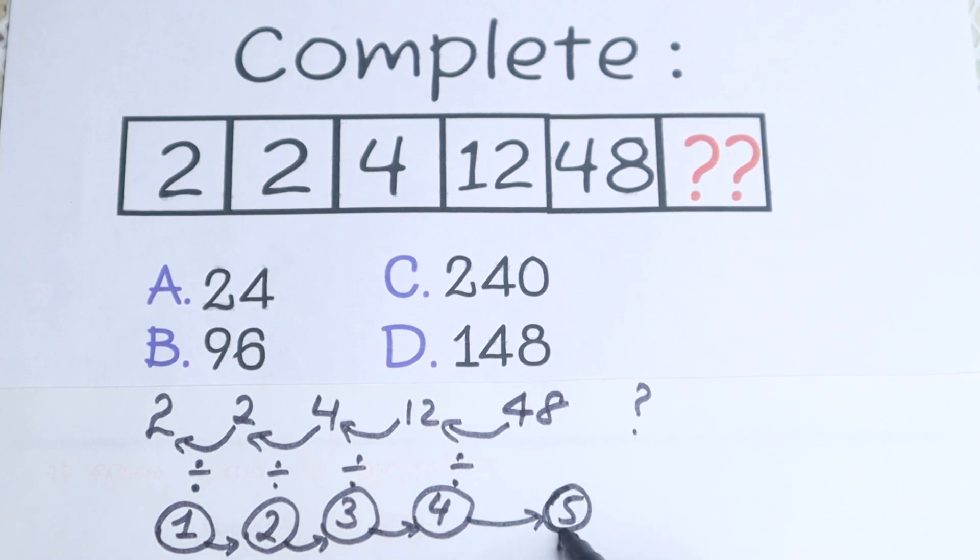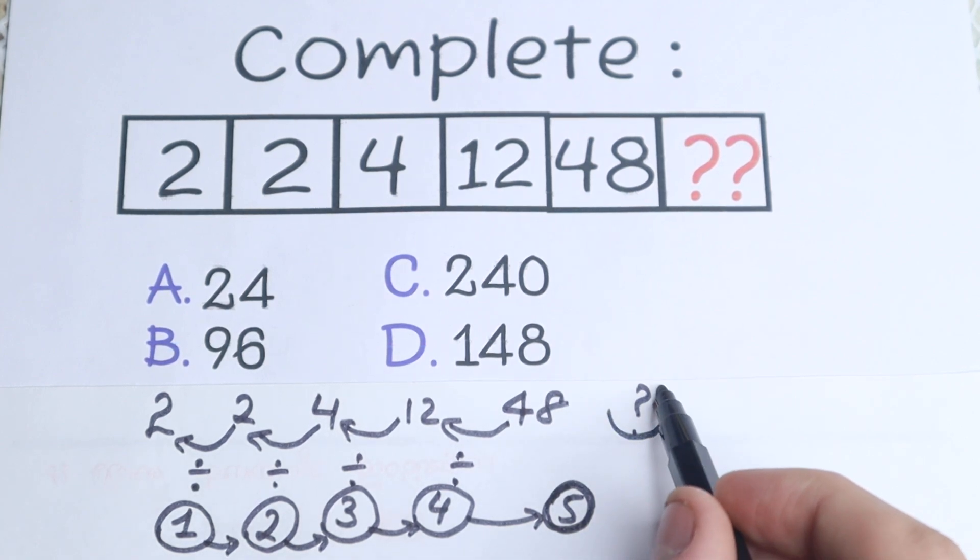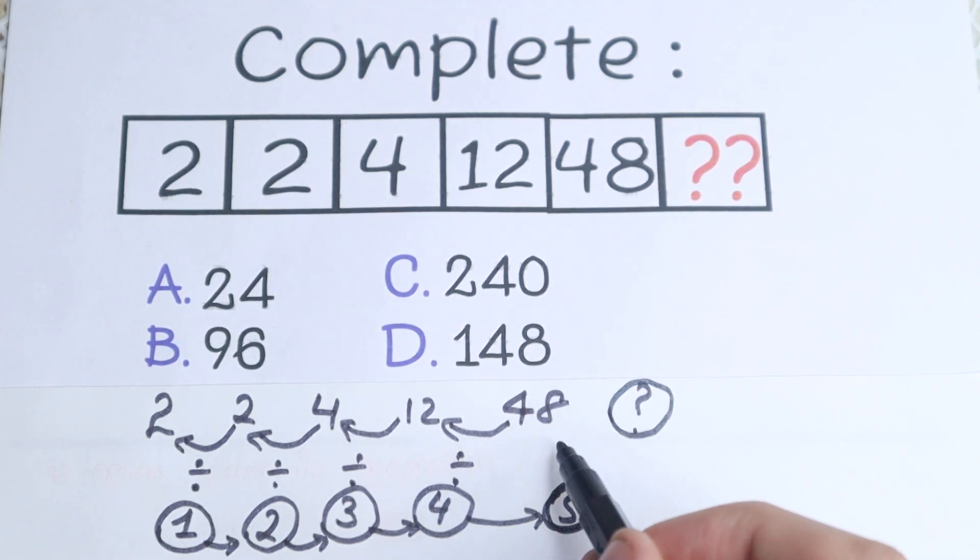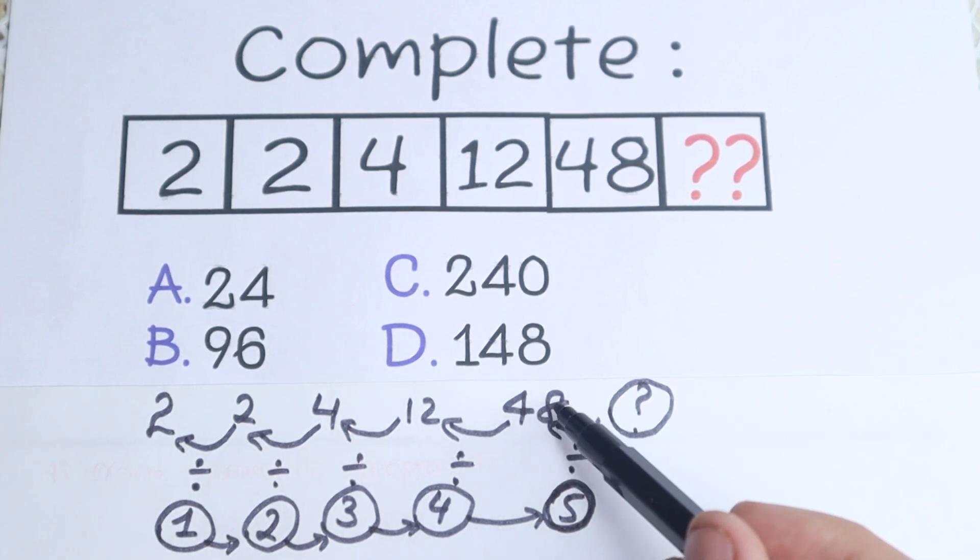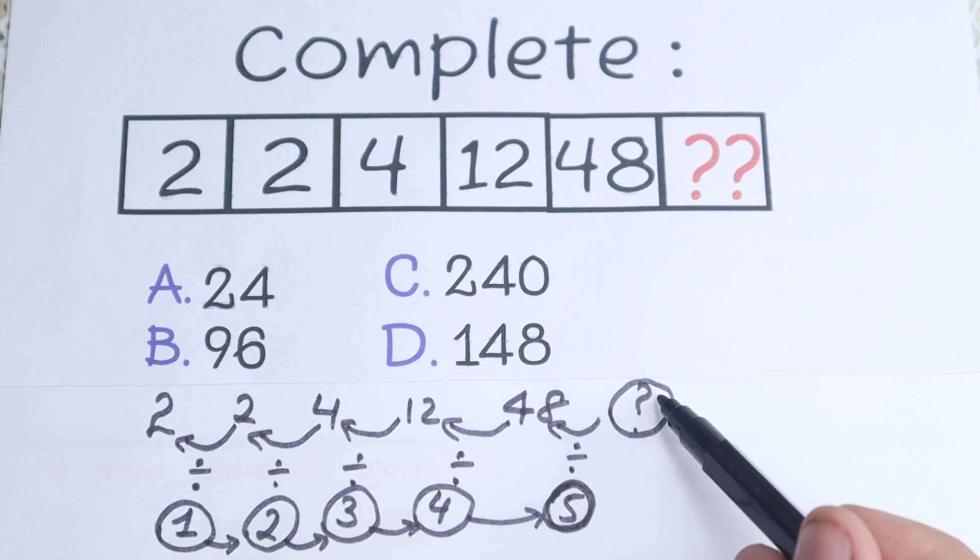So our final answer in this circle will have 5. So this number, we don't know it. But if we divide this number by 48, we will have 5. So how can we find this number in the circle? Of course, with multiplication. Because if we multiply 48 by 5, we will have this number. And if we divide this number by 5, we will have 48.